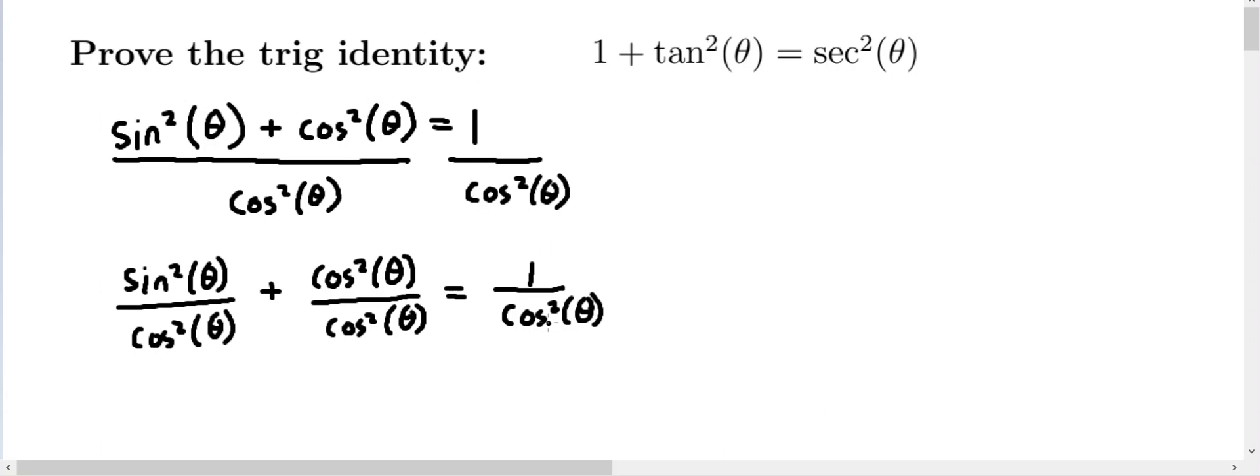And now, we can immediately cancel out cosine squared of theta divided by itself. So, that'll just leave the number 1.